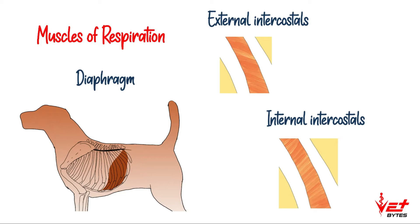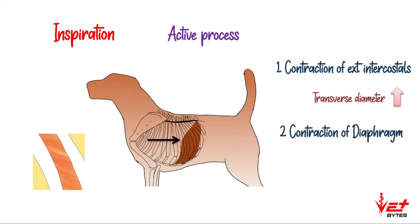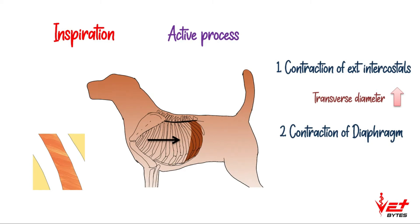The first phase is inspiration, which is inflow of air into lungs. It is an active process. Contraction of external intercostals causes outward and forward movement of ribs, and hence the transverse diameter of the thorax increases. Contraction of diaphragm decreases the anterior convexity of the diaphragm, hence the longitudinal diameter increases.